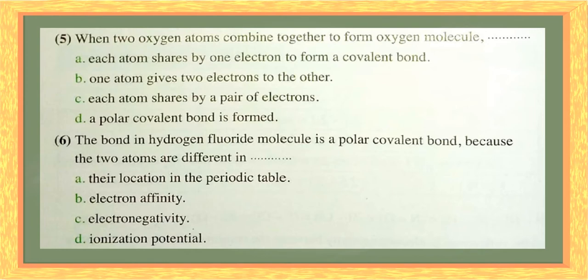Question five: when two oxygen atoms combine together to form an oxygen molecule, each oxygen atom has six electrons in the valence shell. So each atom shares a pair of electrons. The choices are: each atom shares one electron — no; one atom gives two electrons to the other — no; each atom shares a pair of electrons — yes, that is the right answer. So a pure covalent bond is formed.